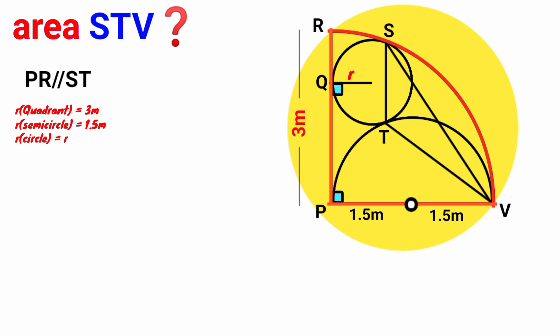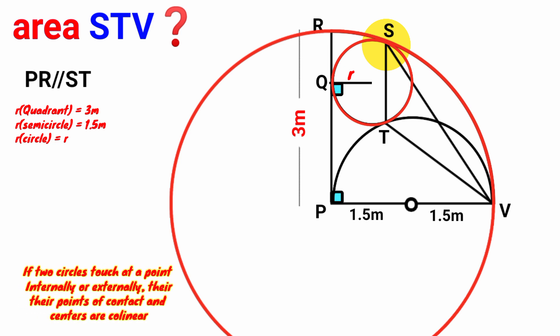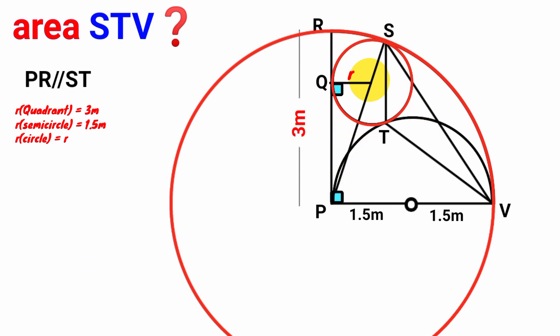A quadrant is one-quarter of a circle. If we draw out the full circle, we have a big circle, and this small circle touches it at one point. From circle theory, if two circles touch at a point internally or externally, their point of contact and centers are collinear. The center of the big circle and the center of the small circle lie on the same straight line through that contact point. The radius from center P to the contact point is three meters, so since this segment is r, the other part must be three meters minus r.